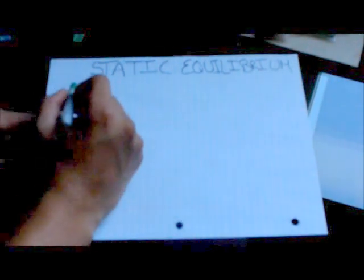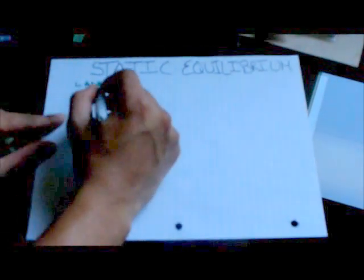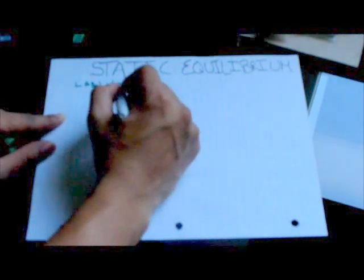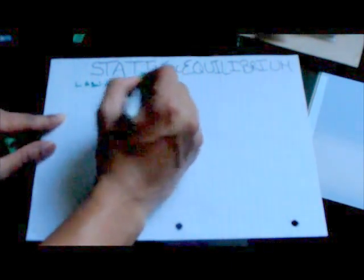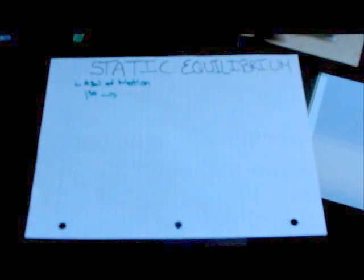So the way we'll approach or analyze what static equilibrium is, is through Newton's laws of motion. The first law states that an object will stay at rest until, or unless, an external unbalanced force acts upon that object. If an external unbalanced force acts upon that object, then motion will be created.